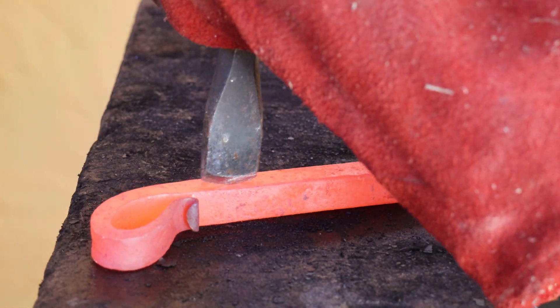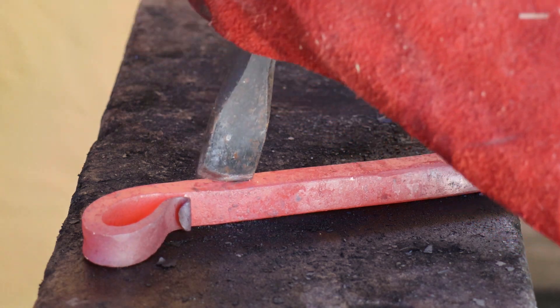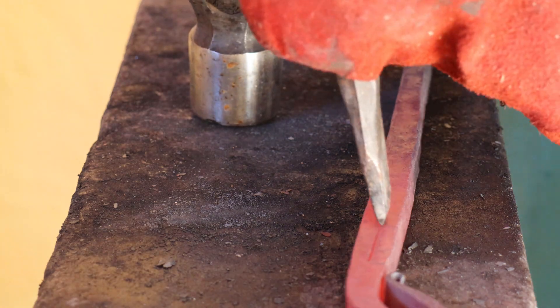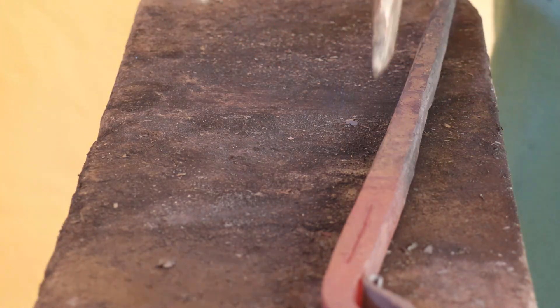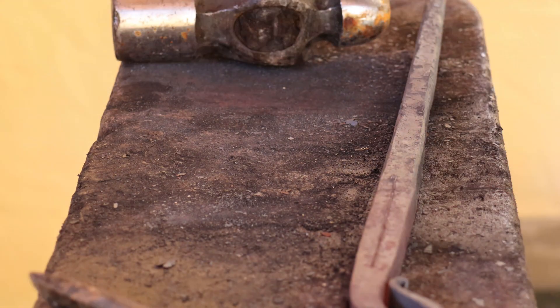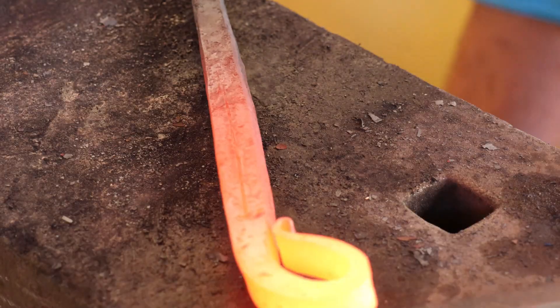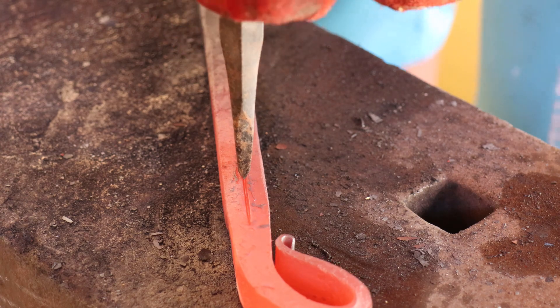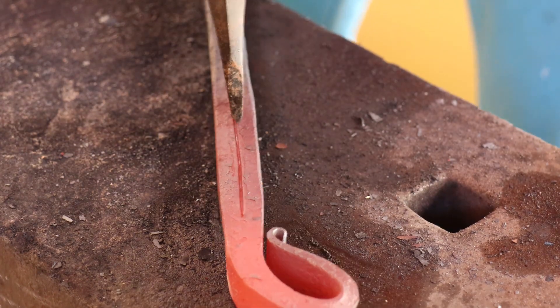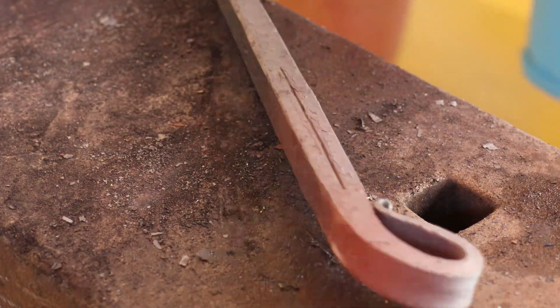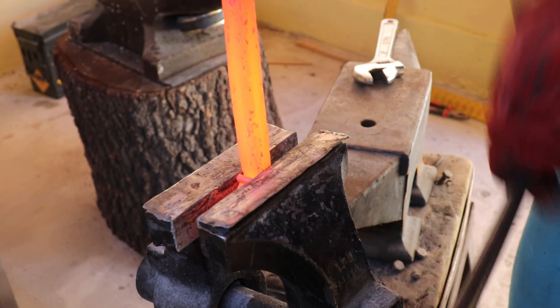Then I chisel down all four sides in preparation for the Roman twist. Now I'm just taking it over to my leg vise and do two full twists.